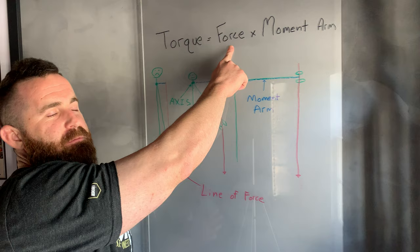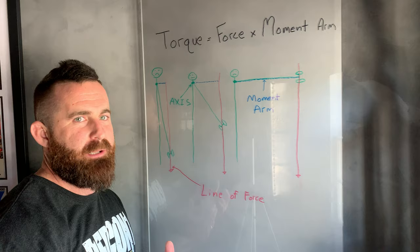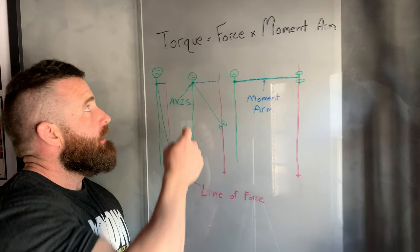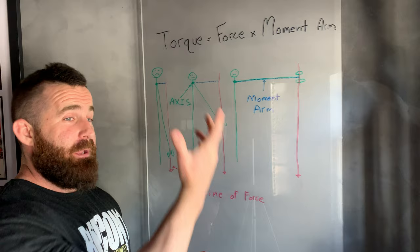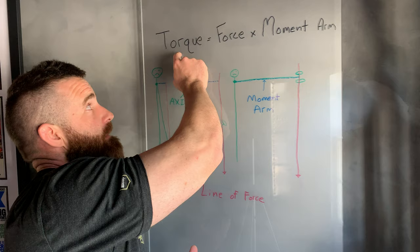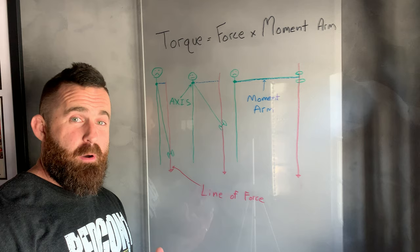Here's an extreme example: if force is a billion pounds—someone's holding a billion-pound dumbbell—and the moment arm is literally zero, how much torque is there? A billion times zero is zero. It doesn't matter what number you put in for force if the moment arm is zero, then torque is zero. So if we're trying to impose force on our joints and make muscles work as hard as they can, spending time on an exercise where torque is zero is completely useless.